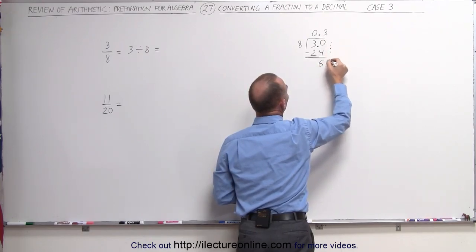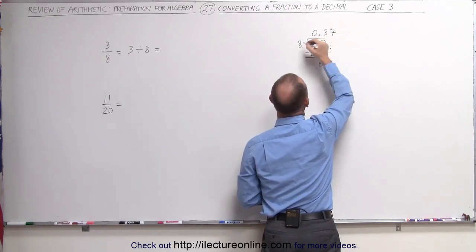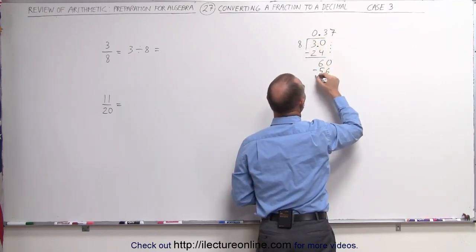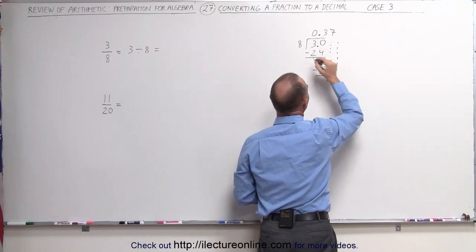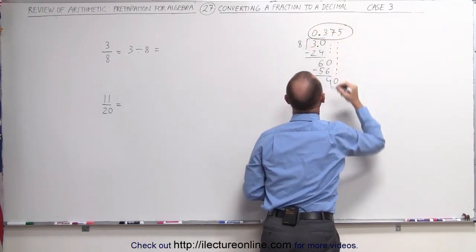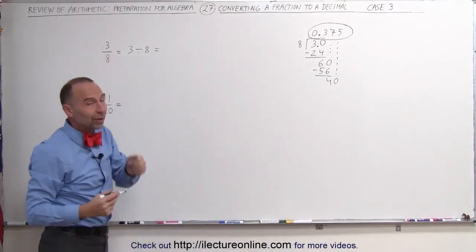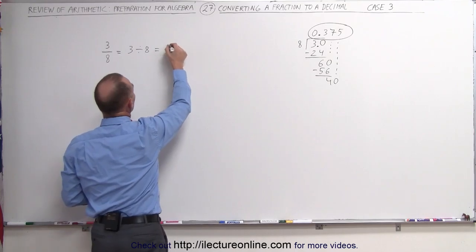Drop down the next zero. 8 goes into 60, that would be 7 times. 7 times 8 is 56, remainder is 4. Drop down the next zero. 8 goes into 40, 5 times. And here's our answer. 3 divided by 8, which is the same as 3 eighths, can then be written as 0.375.